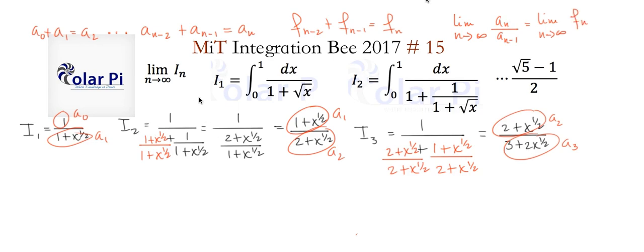And since here, our a sub ns define the Fibonacci sequence, whether we write them with a sub ns or f sub ns, we see that the limit as n goes to infinity of the nth term divided by the term before it is going to be phi, the golden ratio, which is 1 plus root 5 over 2.